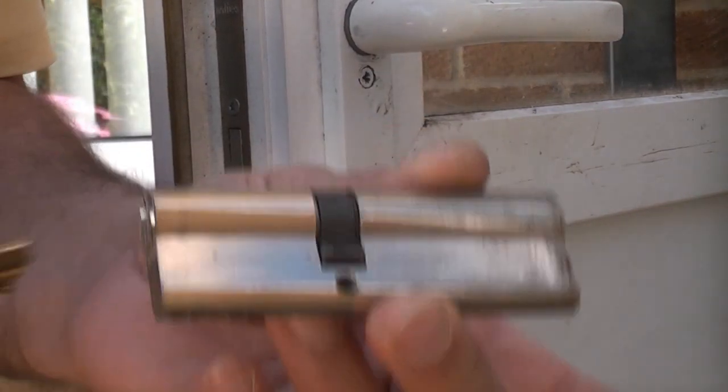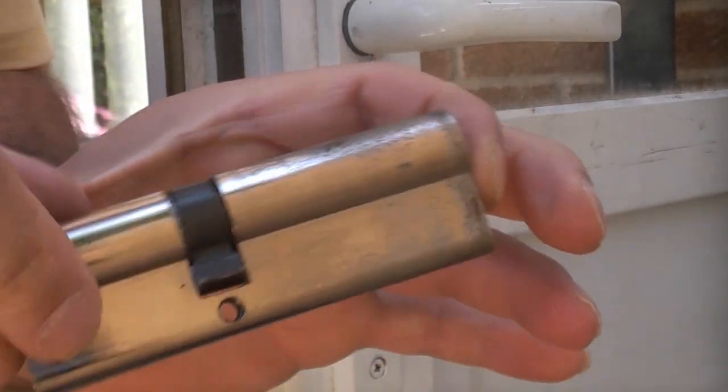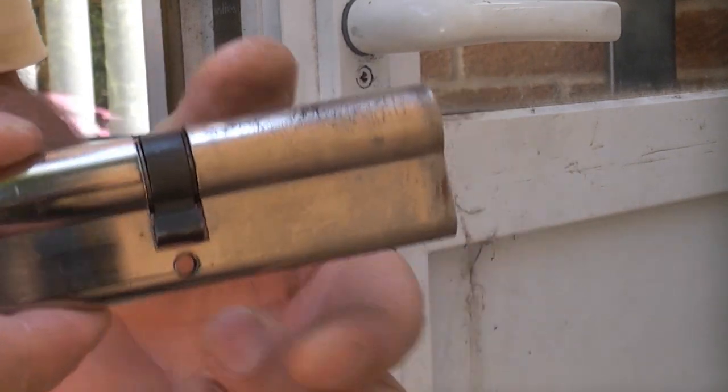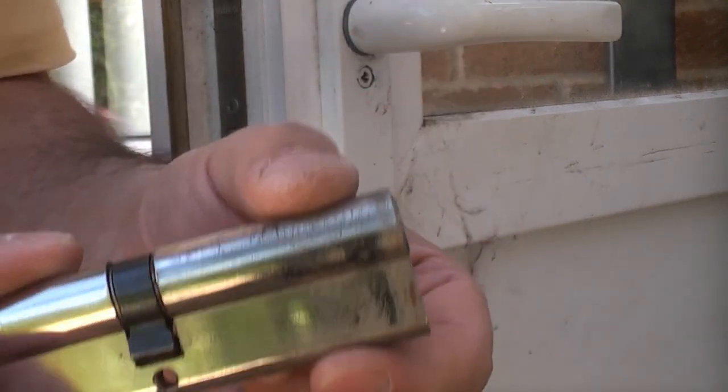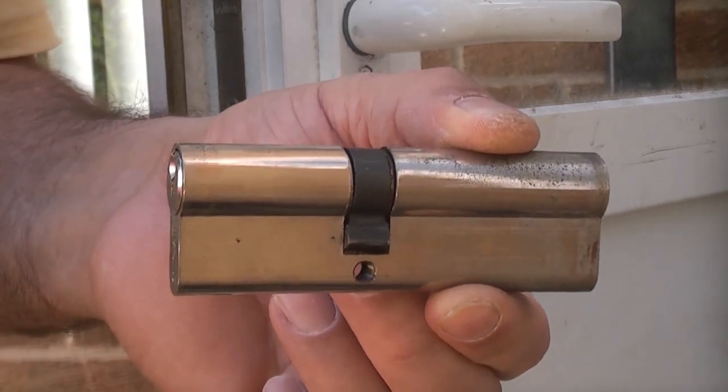Once you've got that removed, all you need to do is take that to your local locksmith or shop that stocks these and get a direct replacement. It is a good idea to get the high security one when you are replacing one of these. You do not want to get one that can be snapped easily because that is a real weakness in a door like this.